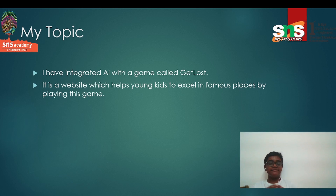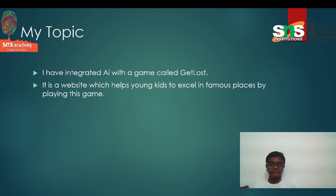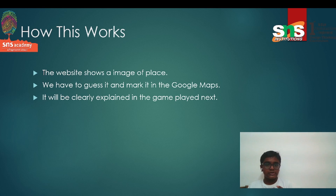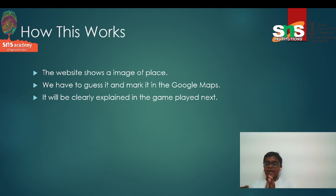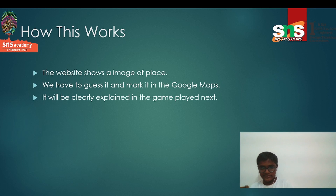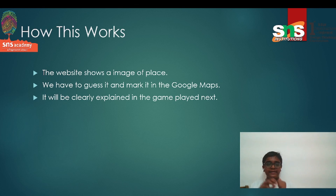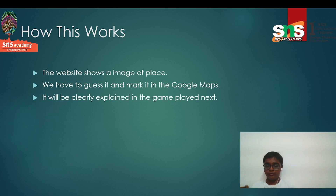My topic integrates AI with a game called Get Lost. It is a website that helps young kids learn about famous places by playing this game. The website shows an image of a place — for example, the Taj Mahal — with a 360-degree view. You have to guess the location and mark it on Google Maps, which is integrated with Get Lost.